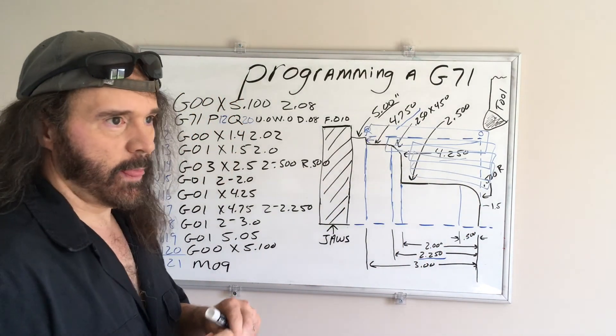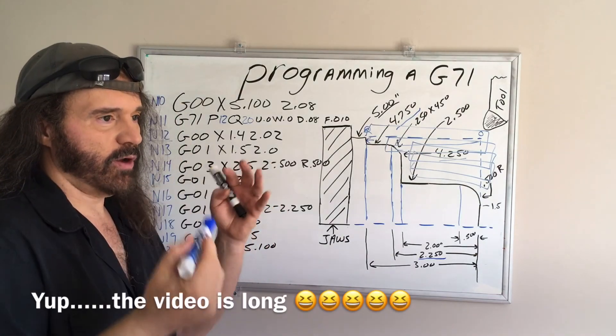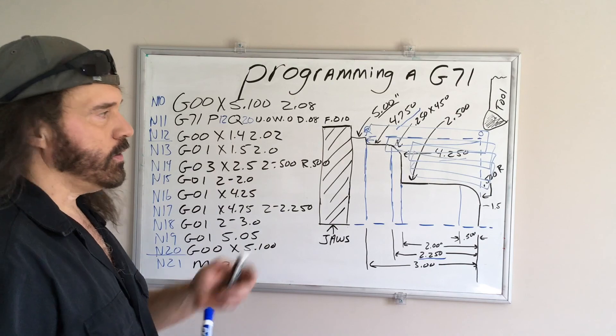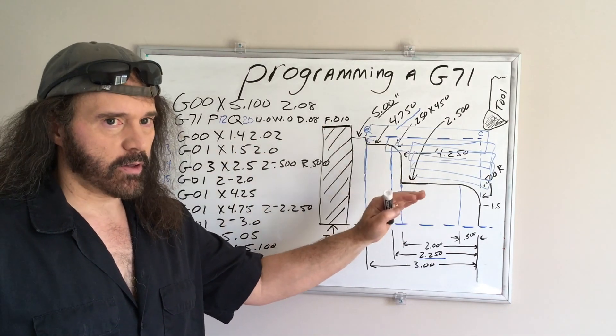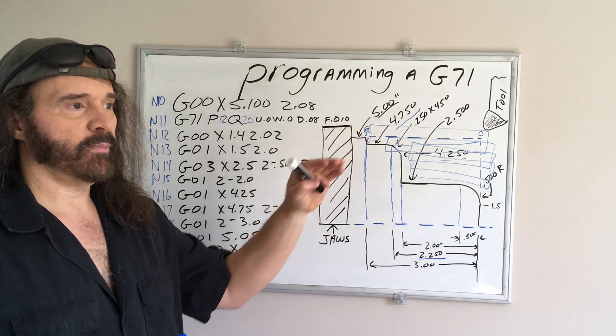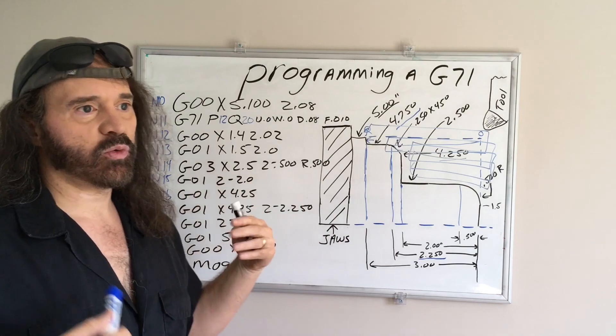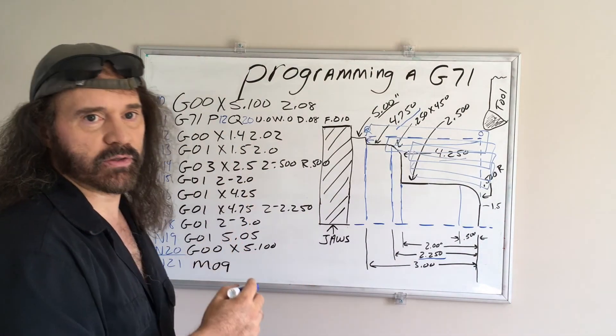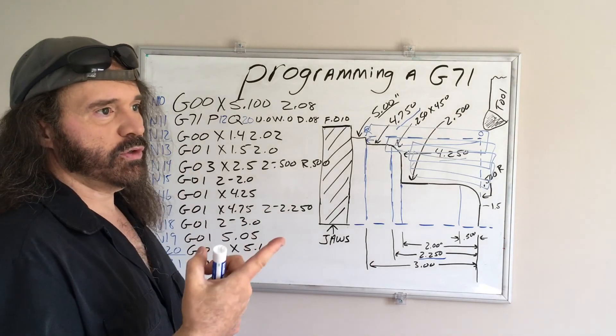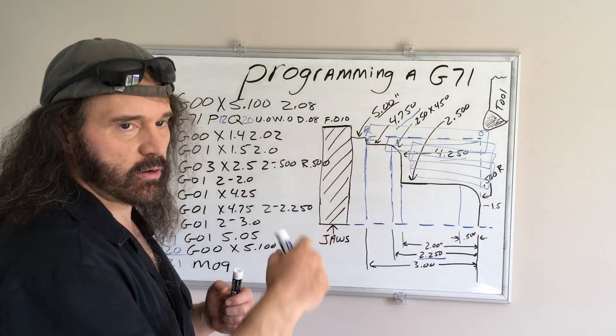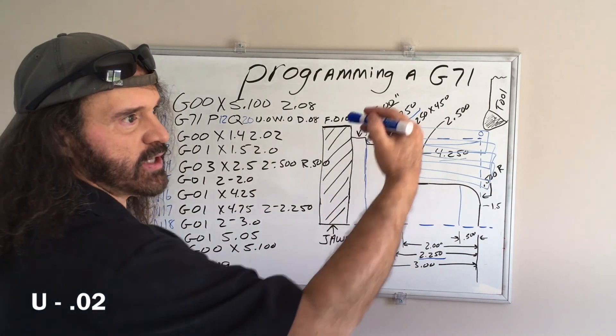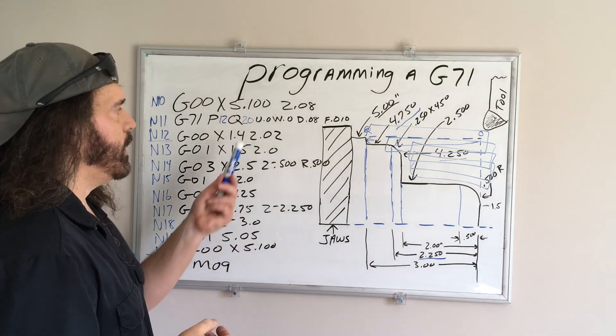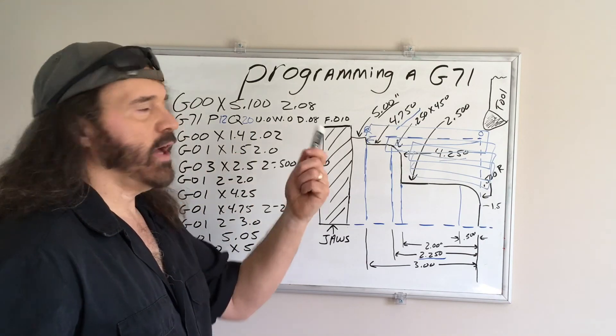Now the one thing I want to explain, and I hope this video isn't too long, because I don't want to make it very long. What is this U-code and W-code? A U-code is, if it's a positive value, that's how much you want to stay above this. So if I added 20 thousandths, say u.02, it's going to stay 20 thousandths above all your X dimensions. If you were doing a cut on the inside, such as a boring cycle, that U-code would be a negative number that would stay below the finish or final cut. But for this example, I'm just going to leave it zero, because I'm assuming we're not going to do a finish pass.